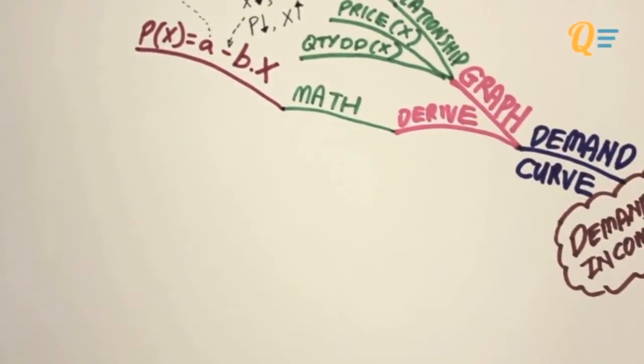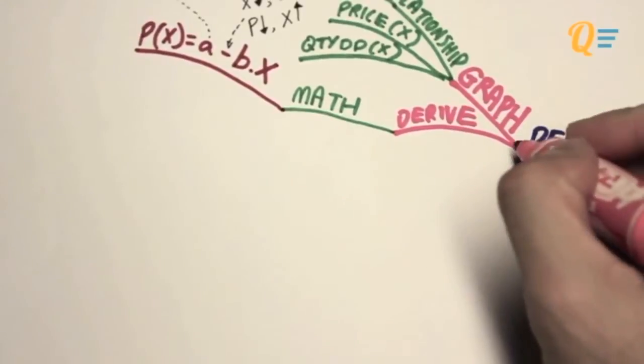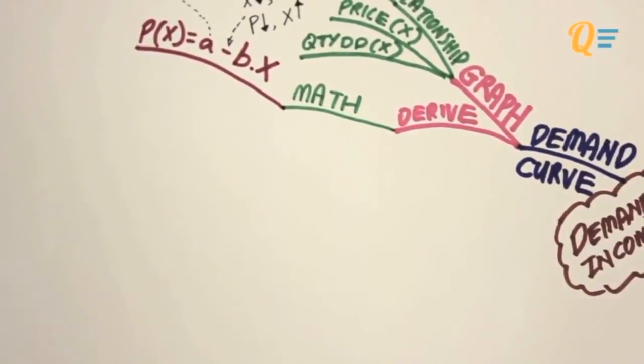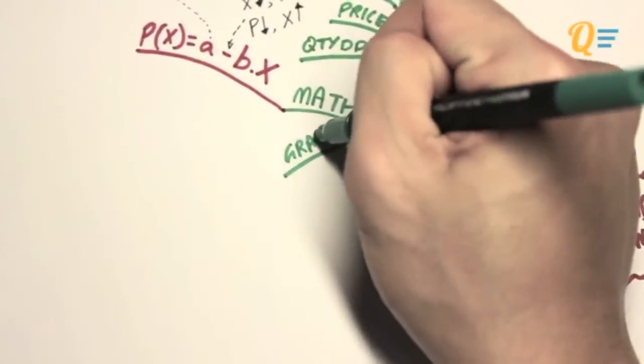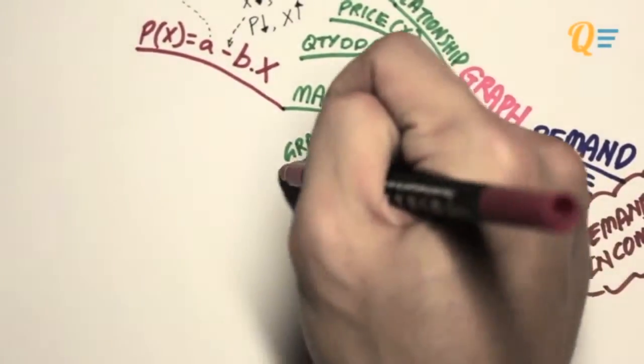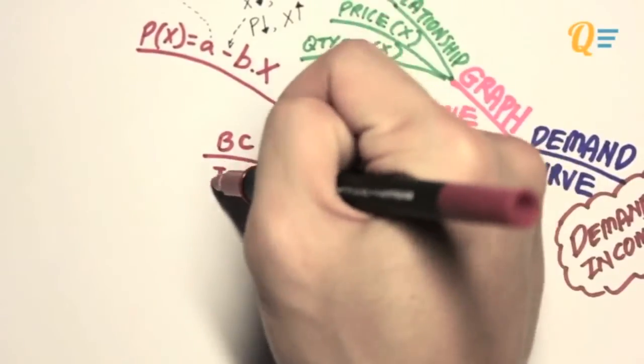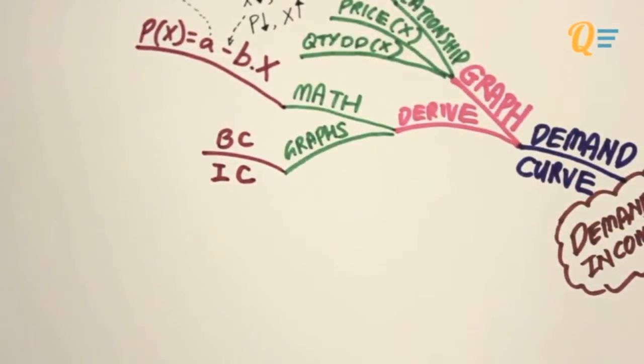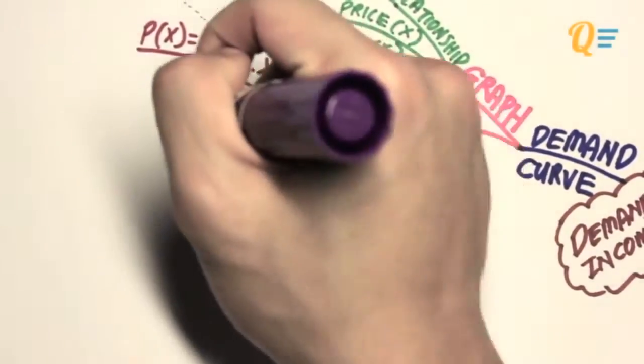That was pretty straightforward, wasn't it? I don't think it's that difficult to draw a straight line given a demand function. Well, the next method, unfortunately, is not as simple as the previous method. We're going to learn how to use graphs to draw the demand curve. And specifically, we are going to need the budget constraint as well as the indifference curves.